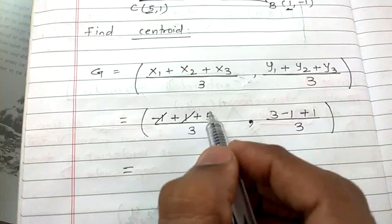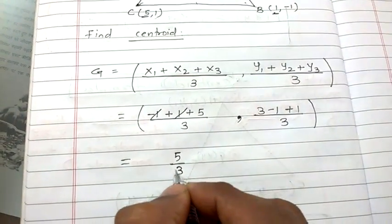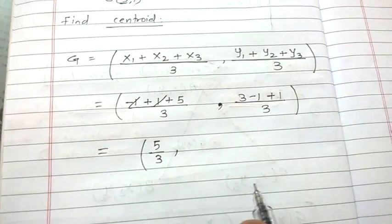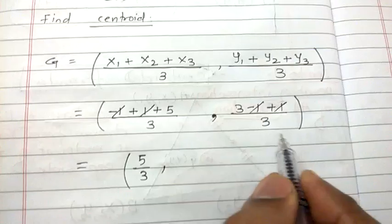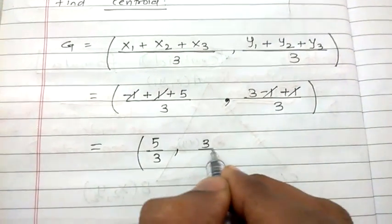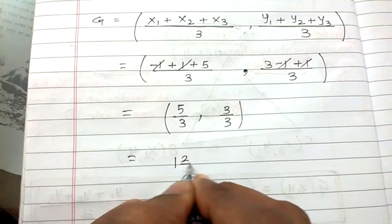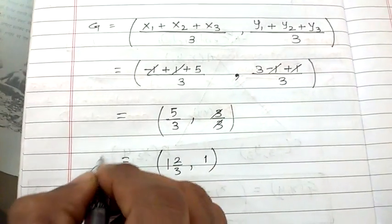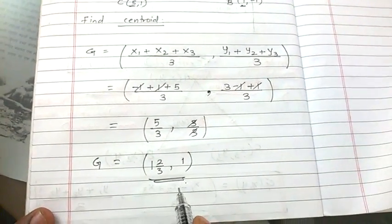minus 1 get cancelled, so it will be 5 by 3, 3 by 3, which can be simplified as 1. So (5/3, 1) is our centroid.